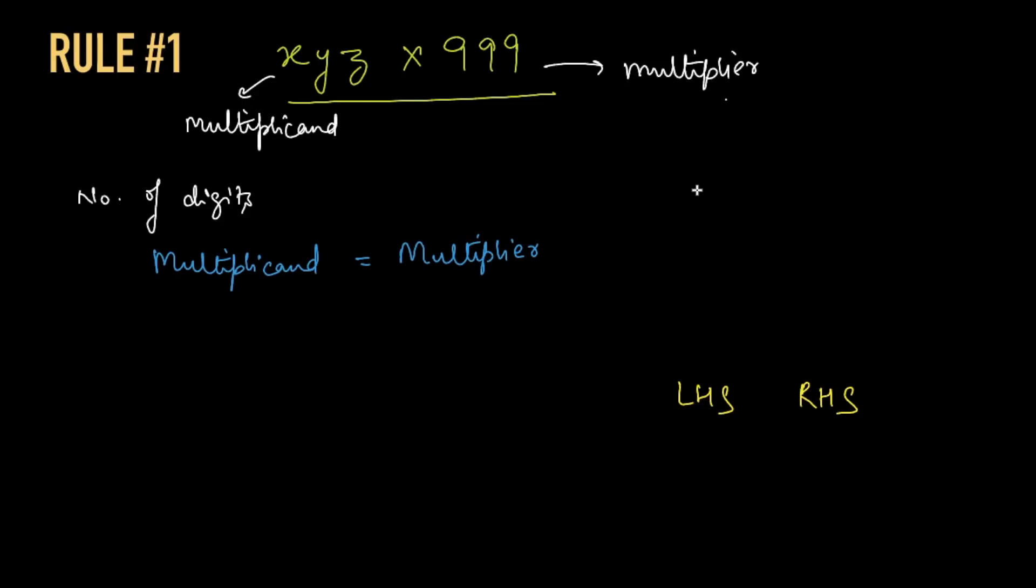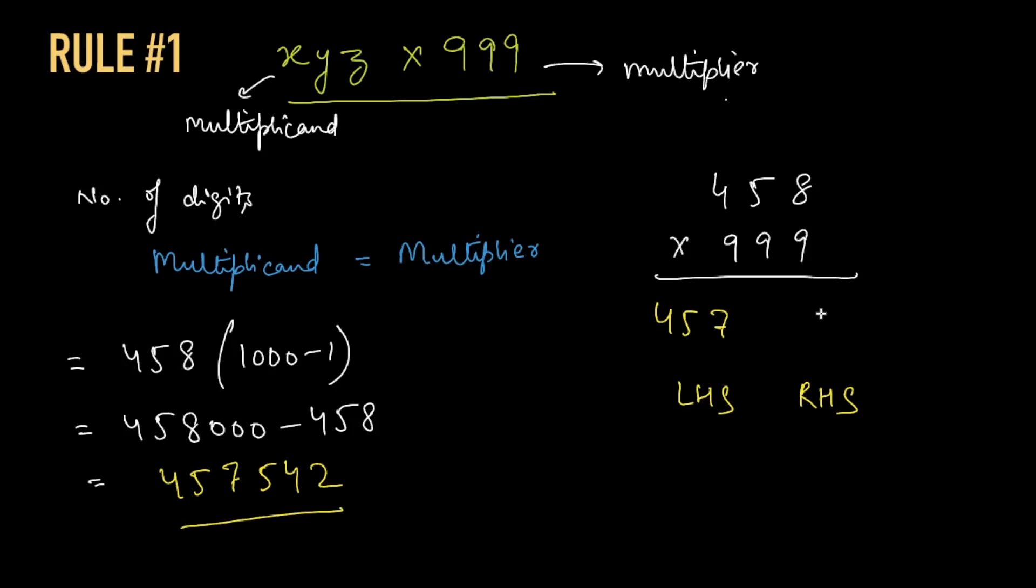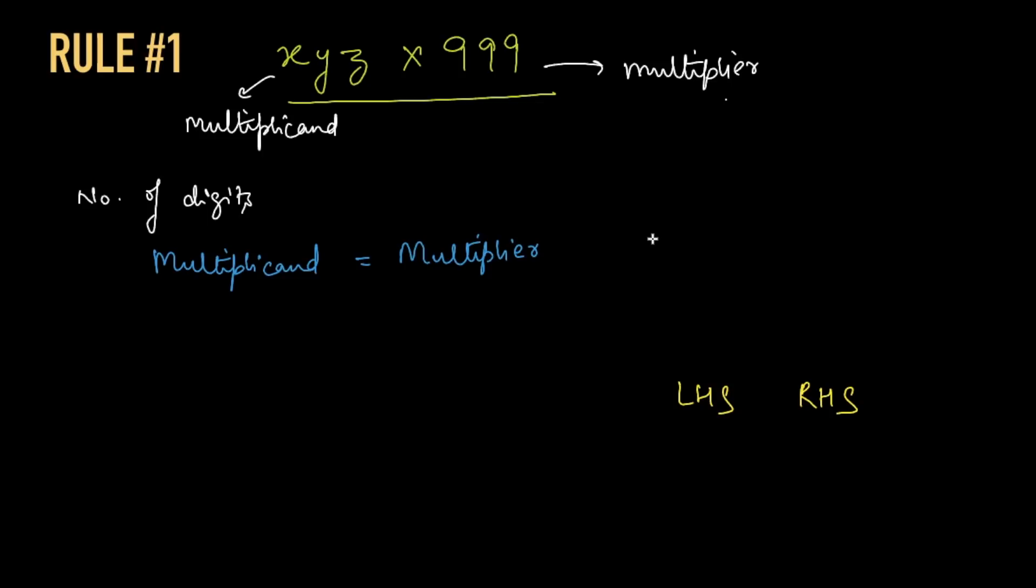Now let's take a slightly bigger example. Let's say we have 458 into 999. If we find it using the other method, the answer would come like this. But as you can see now it is getting tougher to find the answer by using conventional methods. But with our shortcut method it is very simple, and still you would not need to touch your pen and paper. So again the same method: to find LHS, we have to subtract 1 from the multiplicand, so it would be 457. And to find RHS, we have to take the complement of the multiplicand. So simply keep subtracting the digits from 9, and the last digit would be subtracted from 10 instead of 9. So 9 minus 4 is 5, 9 minus 5 is 4, and 10 minus 8 would be 2. So we have 457542, which is the same as in this case.